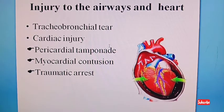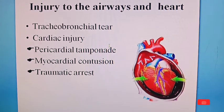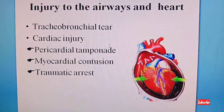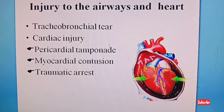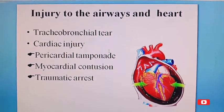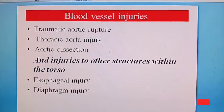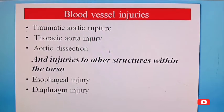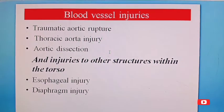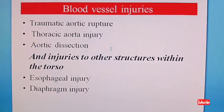Other injuries include airways and cardiac injuries: tracheobronchial tear, cardiac injury including pericardial tamponade, myocardial contusion, and traumatic arrest. Blood vessel injuries include traumatic aortic rupture, thoracic aorta injury, and aortic dissection.